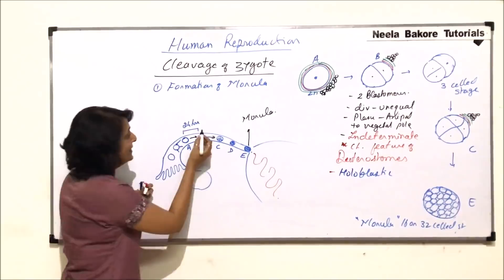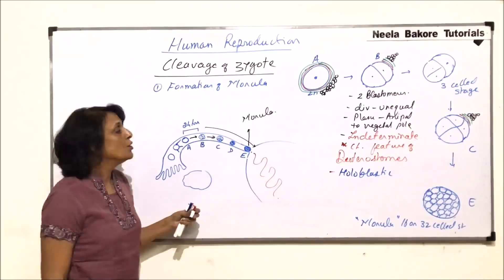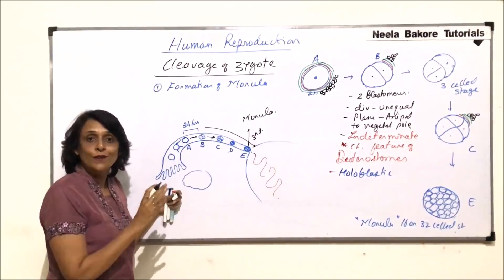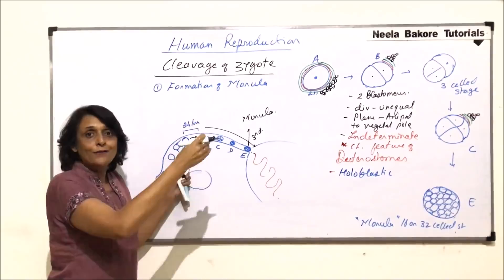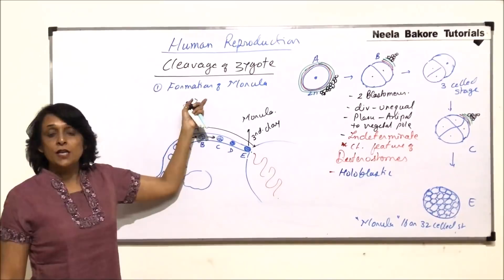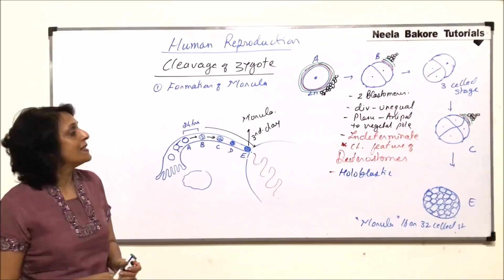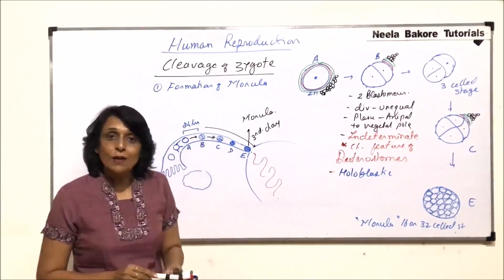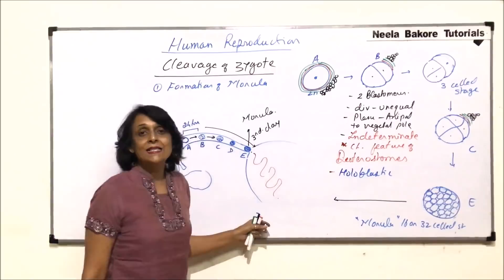Now morula comes into the uterus. This normally happens on the third day after fertilization. So if fertilization takes place now, after three days the morula would reach the uterus. Third day, morula comes into the uterus. So our first stage was morula formation — divisions have taken place and this has resulted into formation of many blastomeres. Morula is now going to undergo a change which is known as compaction.